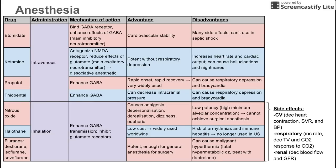Next on this list is ketamine, also administered intravenously. It antagonizes the NMDA receptor. NMDA is one of the receptors for glutamate, which is a main excitatory neurotransmitter. So if you're antagonizing the excitatory neurotransmitter, it might make sense that you are going to have anesthetic effects.